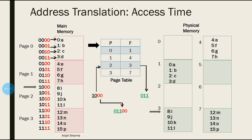Every single time the CPU wants to execute an instruction, it checks main memory to get to that instruction. Each time we manipulate or search the page table to locate the page number, and again we search main memory to reach the particular frame. This searching takes time — that is the excess time — and it becomes very large if the page table becomes very large.